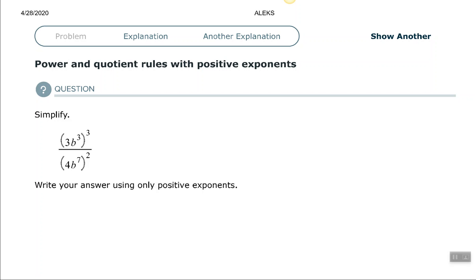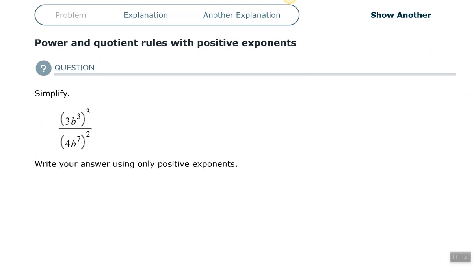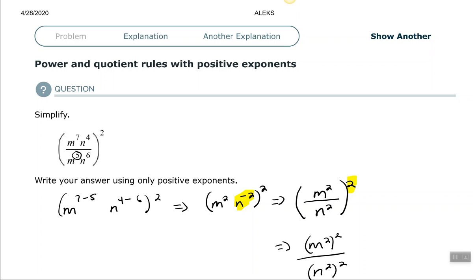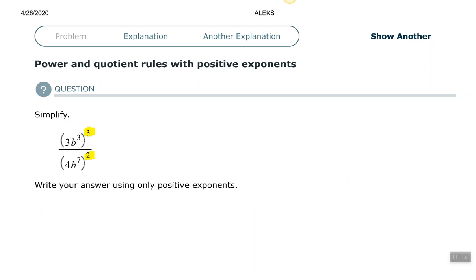Now, this one is a little bit different, because these were being raised to different exponents. The numerator is being raised to the 3rd power, and the denominator is being raised to the 2nd power. So we cannot simplify that b to the 3rd and b to the 7th, because they're being totally raised to two different exponents. If you look at the one before, everything was inside the parentheses raised to the 2nd power, so we could simplify the inside there, and the numerator and denominator. On this one, the numerator and denominator are...